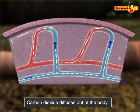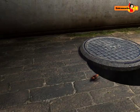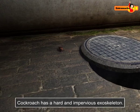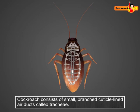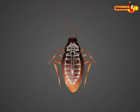In return, blood picks up carbon dioxide and transports it to the skin capillaries, from where it diffuses out of the body. Unlike earthworm, insects like cockroaches have a hard and impervious exoskeleton. They do not have a single respiratory organ. Instead, the respiratory system of insects like cockroach consists of small branched cuticle-lined air ducts called trachea.